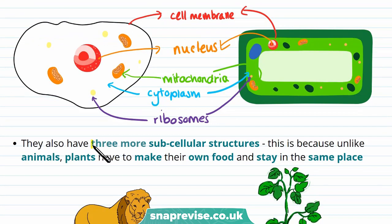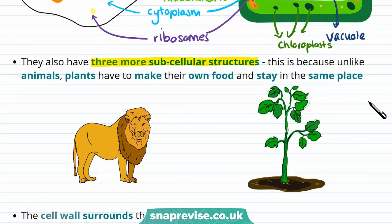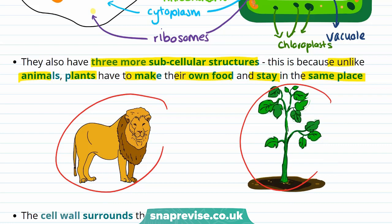However, plants also have three more subcellular structures: a cell wall, a vacuole, and chloroplasts. They have these additional structures because unlike animals, plants have to make their own food and stay in the same place. For example, a lion can just hunt for its food, whereas a plant has to make its own food using photosynthesis, and these structures help in photosynthesis.